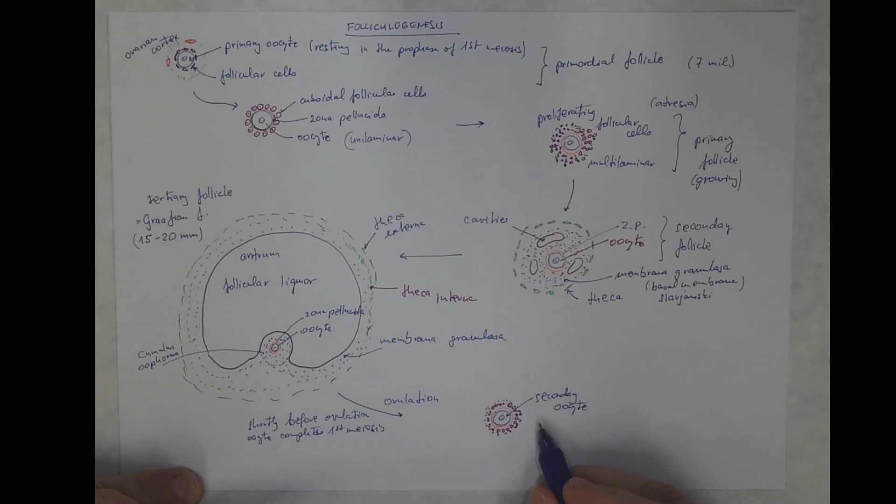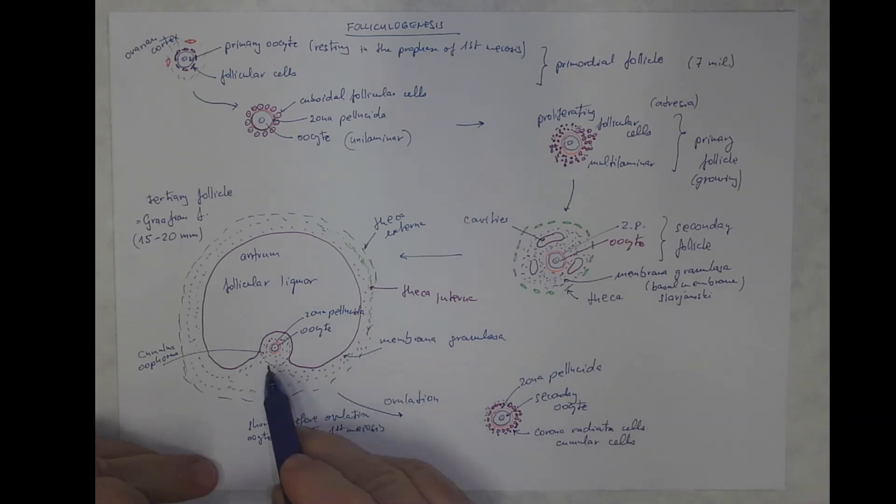So we got secondary oocyte that will be arrested in the second meiotic division until fertilization. We got the zona pellucida and the remnants of the membrana granulosa that are called corona radiata cells, also known as the cumular cells, like from cumulus because they originate from the cumulus. Now this enters the abdominal cavity and enters the oviduct, the fallopian tube, its dilated ampullar region, and becomes transported through the fallopian tube.